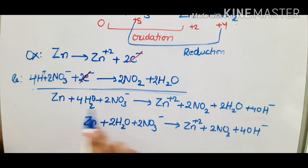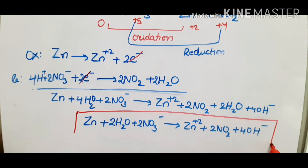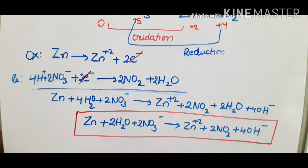The final balanced reaction in basic medium becomes: Zn + 2NO3⁻ → Zn²⁺ + 2NO2 + 4OH⁻ (with water balanced on the appropriate side). This is the balanced redox reaction in basic medium.